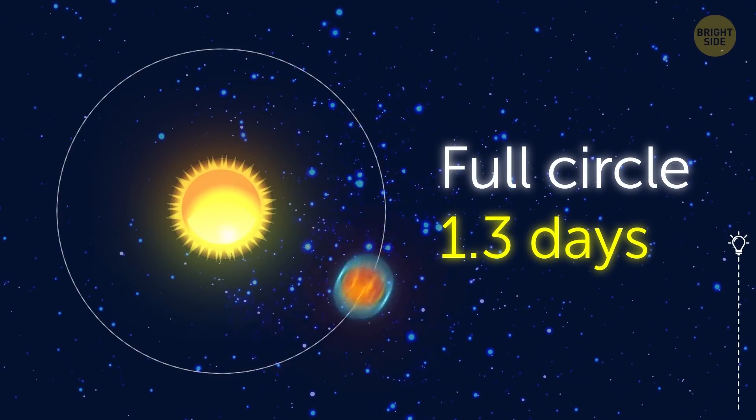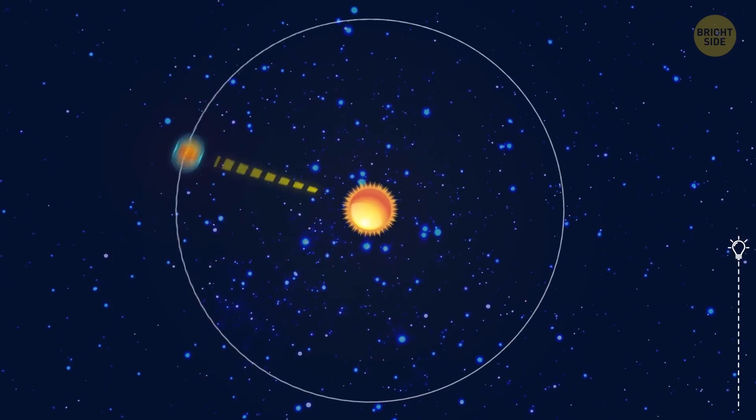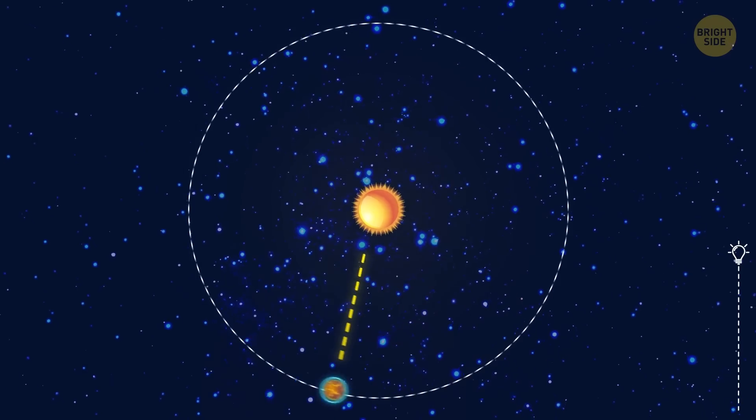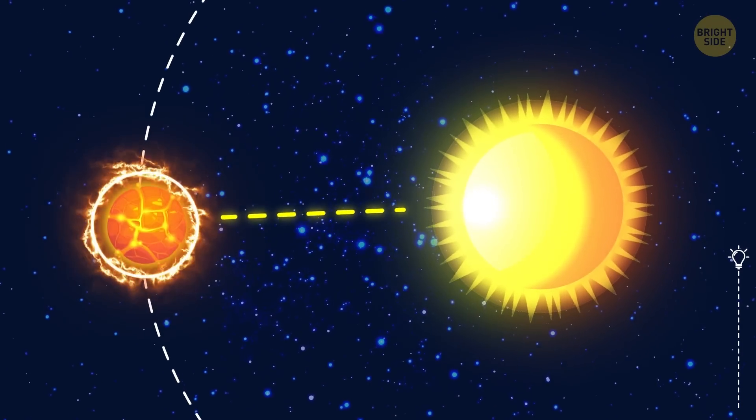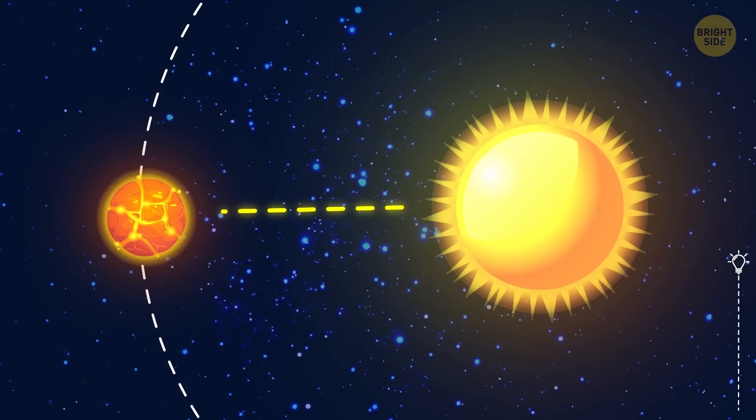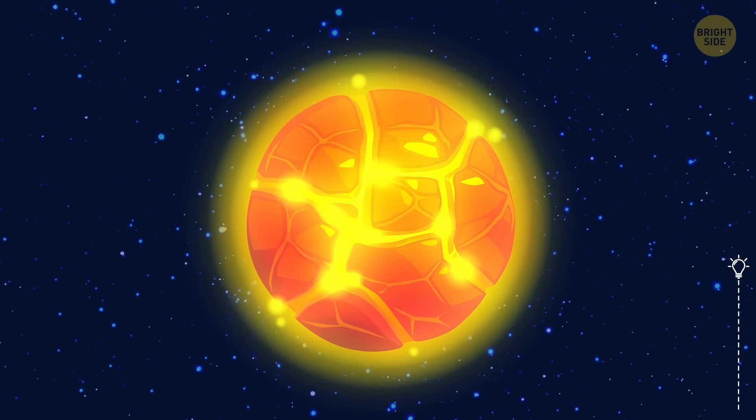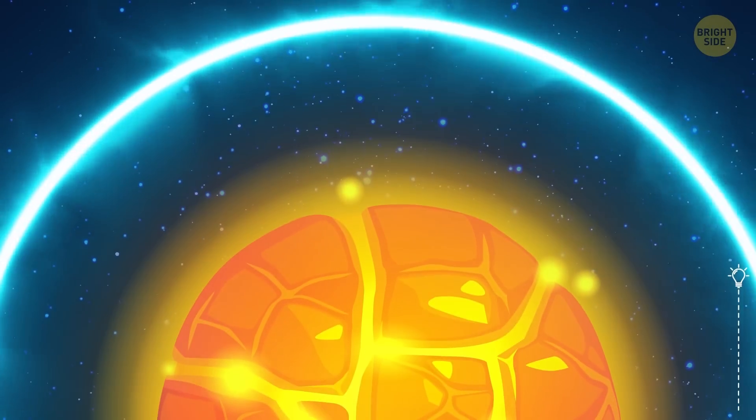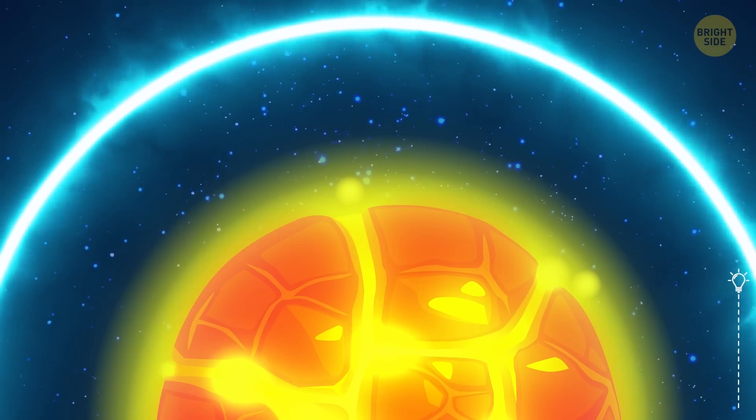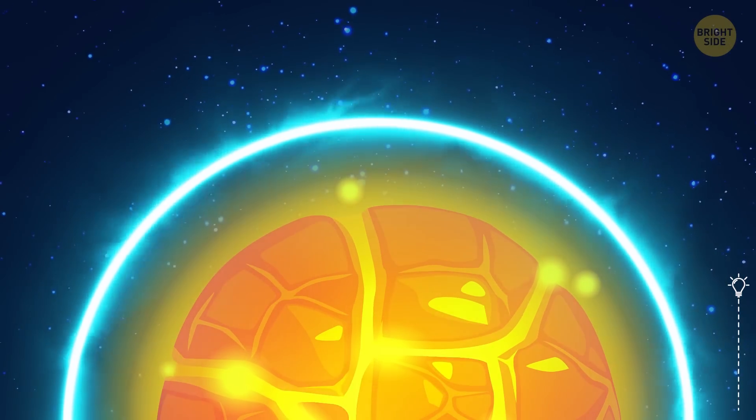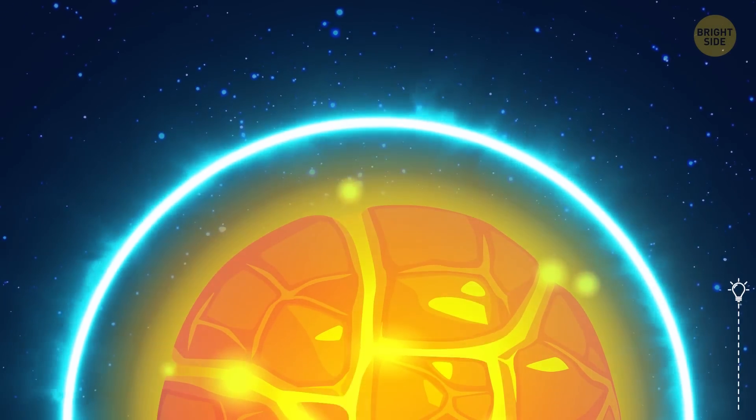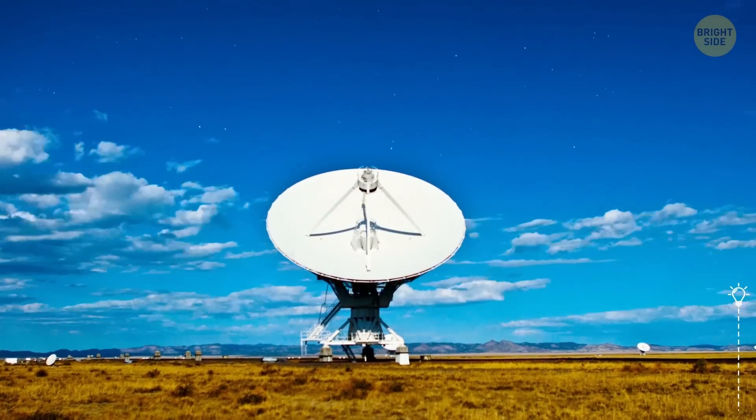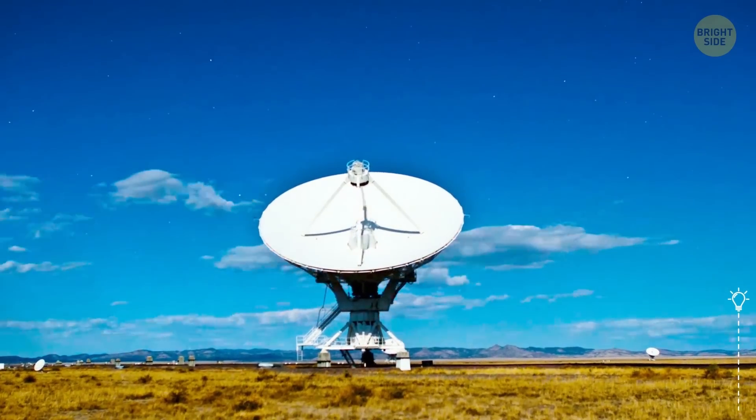One suggestion is that the planet wasn't always that close to the star, and it just recently migrated there, so its atmosphere is evaporating right now. Another possible explanation for the existence of NGTS-4b is that its atmosphere was a lot larger in the past, and we found it just in time to watch the final round of the show. That would mean that we can observe the process and see for ourselves how it happens.